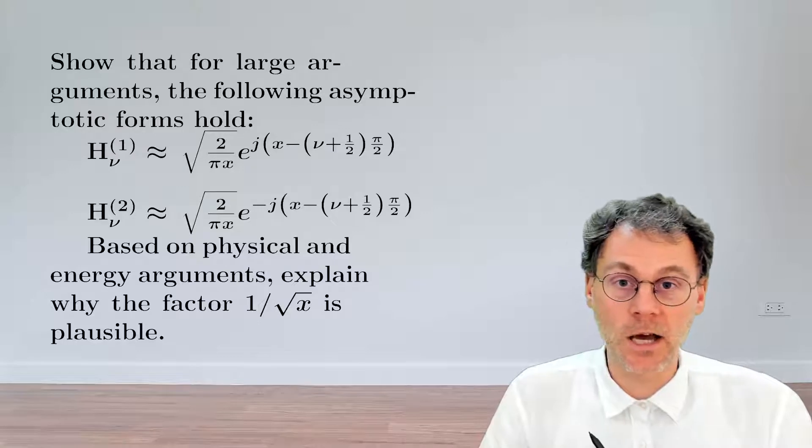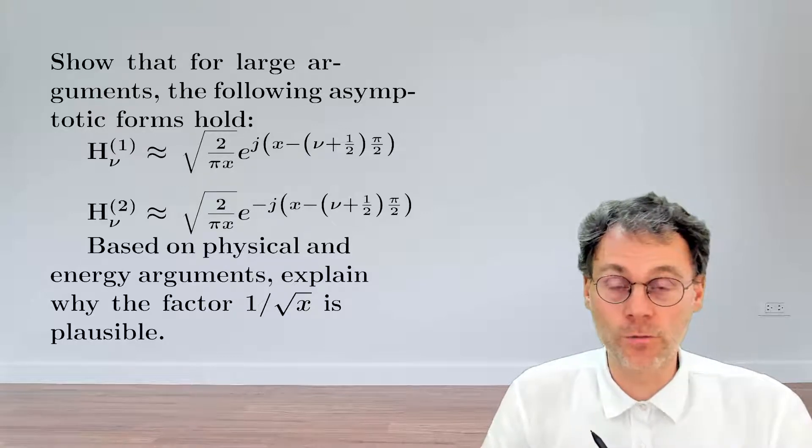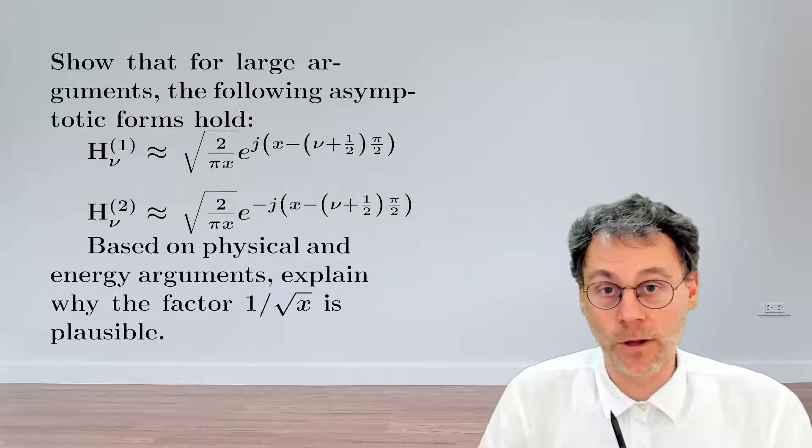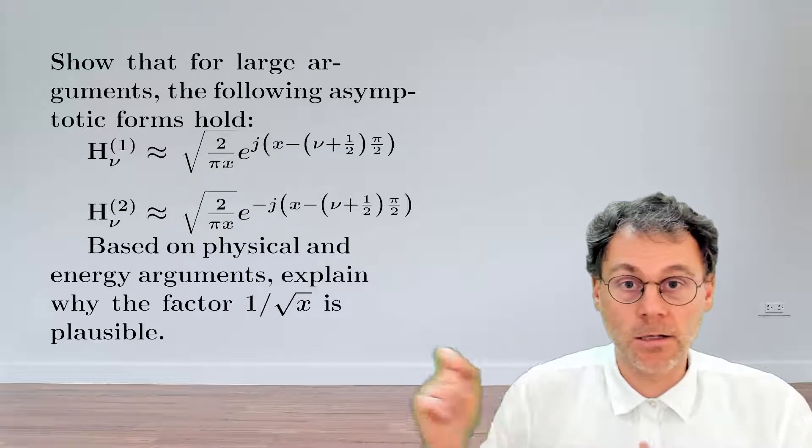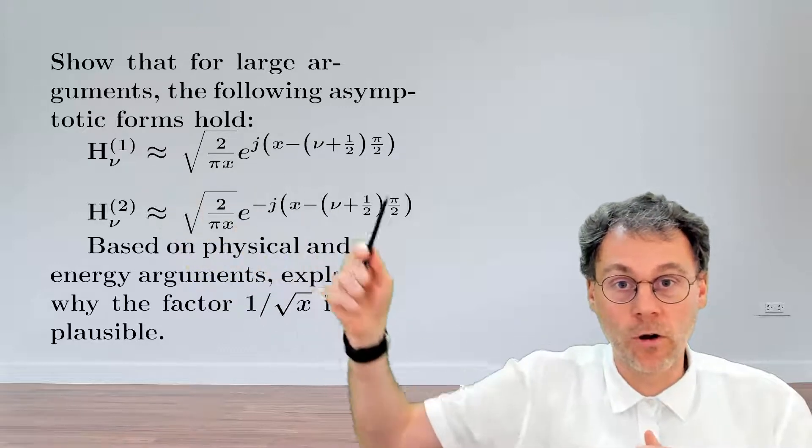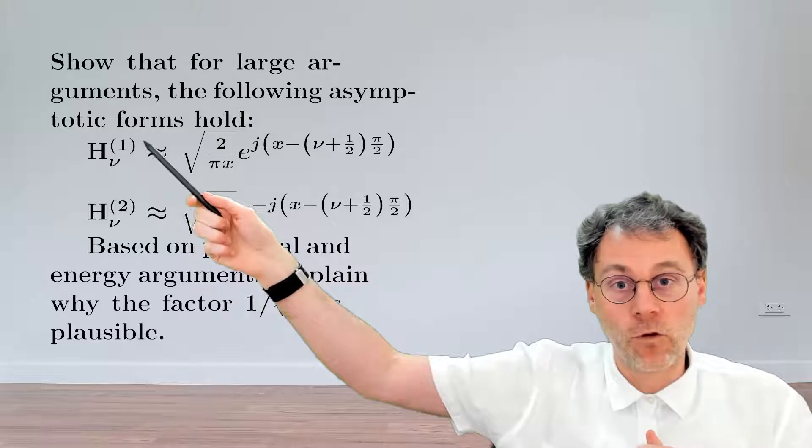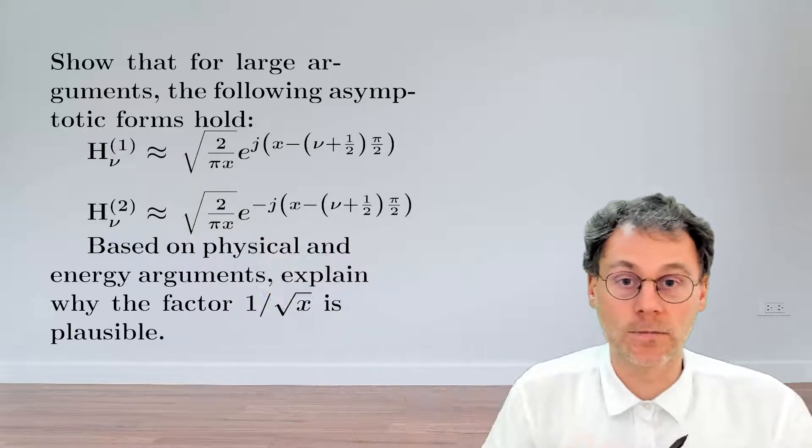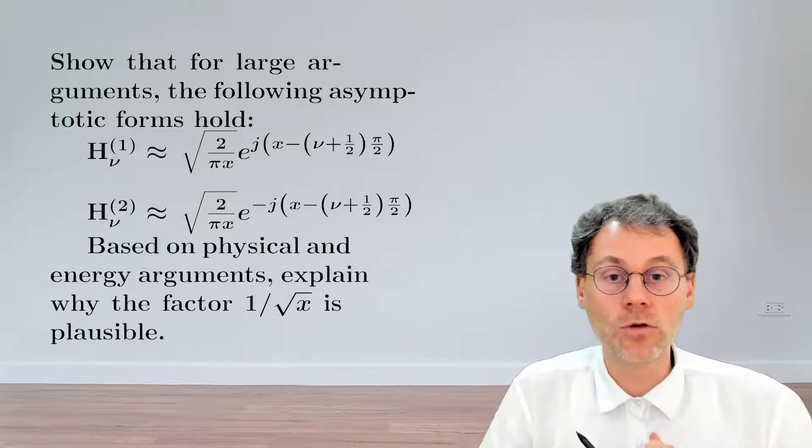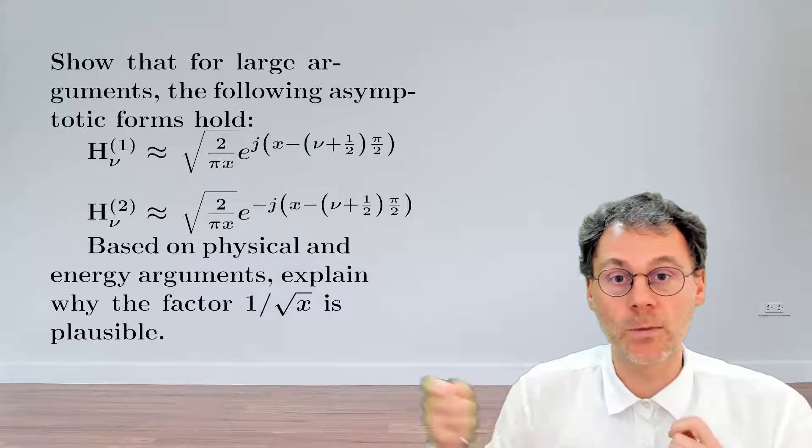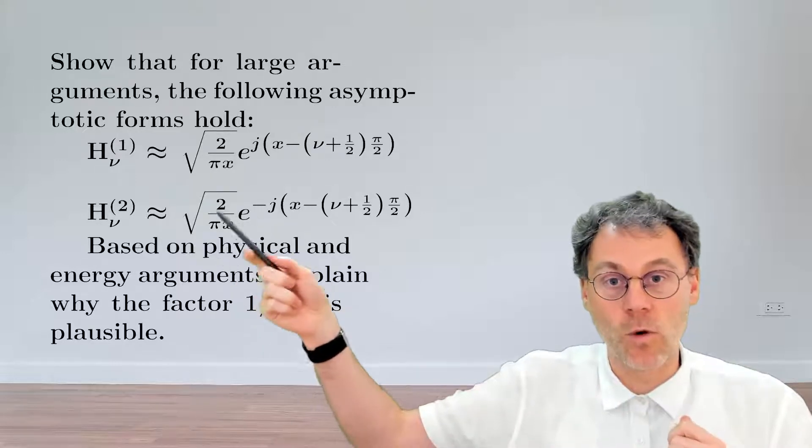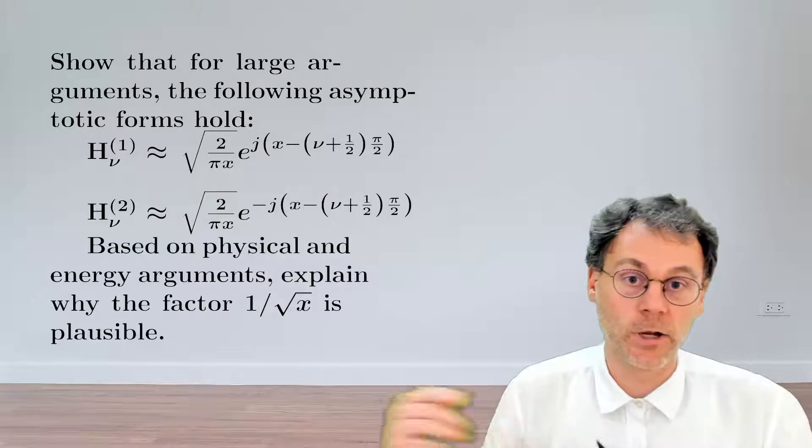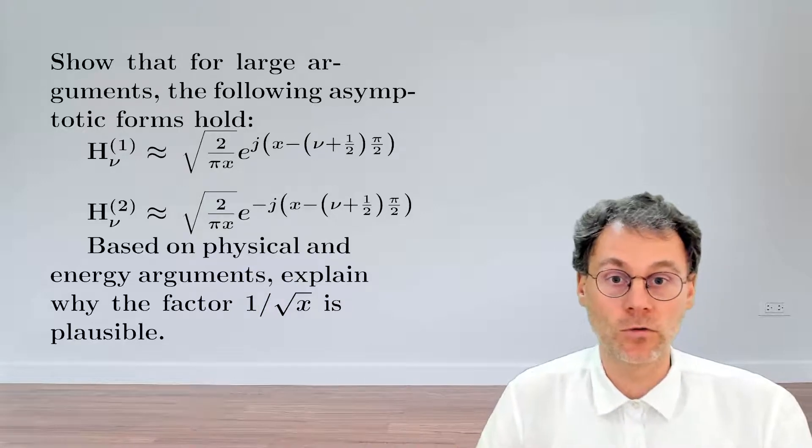In one of the previous exercises, we looked at the asymptotic forms of the Bessel function and the Neumann function. In this exercise, the question is, can you show the following asymptotic expression for our friends the Henkel functions? And more importantly, can you also use your physical insight to try and explain why we have this factor 1 over the square root of x appearing here? So pause the video to think about this.